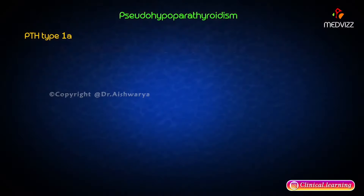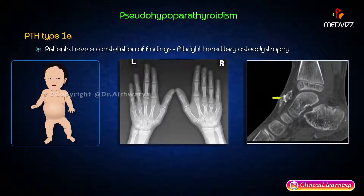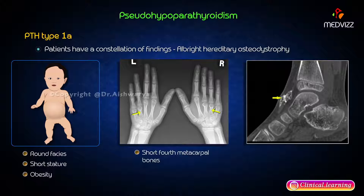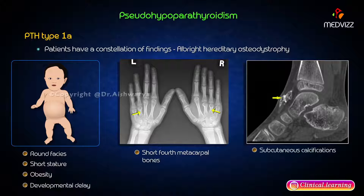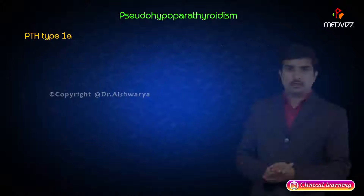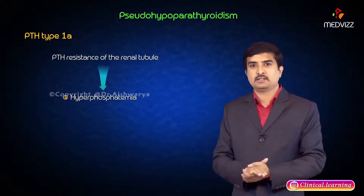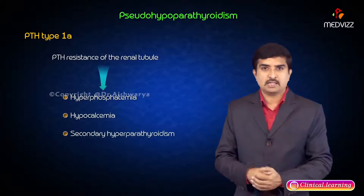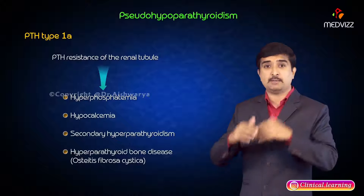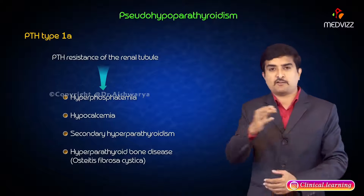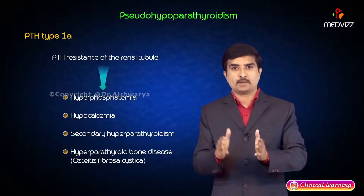Patients with PHP type 1a have a constellation of findings known as Albright Hereditary Osteodystrophy (AHO), which includes round face, short stature, short fourth metacarpal bones, obesity, subcutaneous calcifications, and developmental delay. In addition, PTH resistance in the renal tubules leads to hyperphosphatemia, hypocalcemia, and secondary hyperparathyroidism. Hyperparathyroid bone disease like osteitis fibrosa cystica can be seen in long-standing cases, and serum PTH is elevated due to the hypocalcemic state.